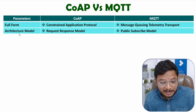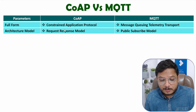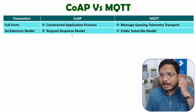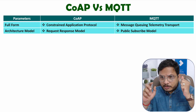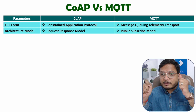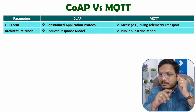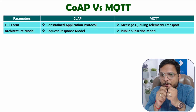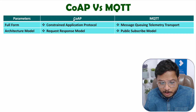The second parameter is Architecture Model. CoAP follows the Request-Response Model. In the Request-Response Model, clients request a service from the server and the server responds to the client. So the client sends a request and the server sends a response — that is the Request-Response Model with CoAP protocol.